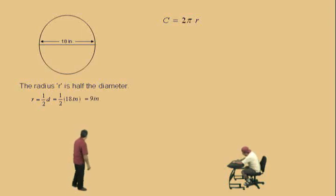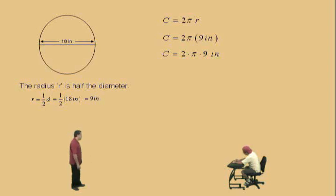9 inches. That's right. So, we'll go to our formula, and it's 2 times π times 9 inches. And here, we're going to multiply the 2 times the 9 first, and that gives us the 18π inches. And that is our final answer.